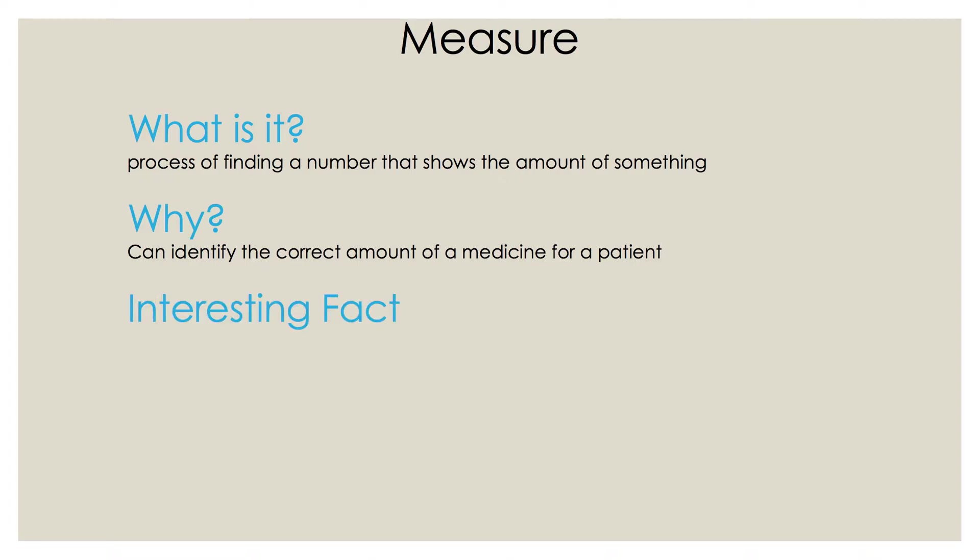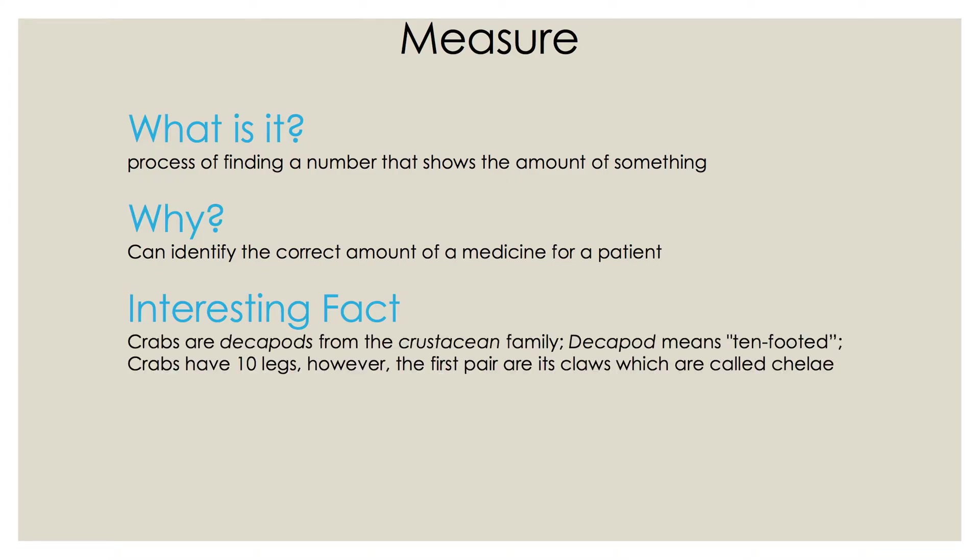Interesting fact. Crabs are decapods from the crustacean family. Decapod means 10-footed. Deca, 10. Pod, footed. So therefore, crabs have 10 legs. However, the first pair are its claws, which are called Kili.